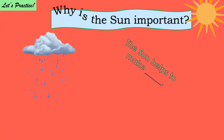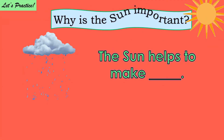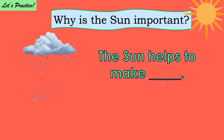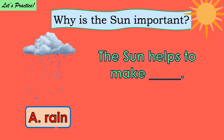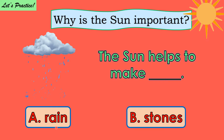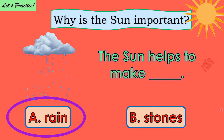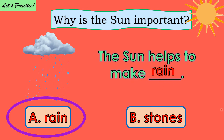Why is the sun important? The sun helps to make blank. Choose between A, rain, and B, stones. One, two, three. Very good! The answer is rain.